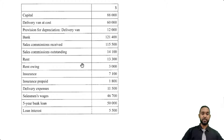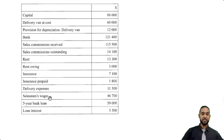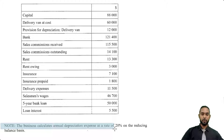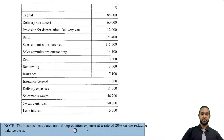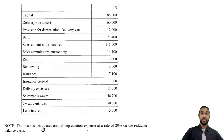Next, we have rent of 13,300 and rent owing of 3,000 — that's an accrued expense, which is going to be added together to get the income statement figure. Next, we have insurance of 7,100 and insurance prepaid of 1,800. If we add accruals, we do the opposite for prepayments, so we're going to subtract this 1,800 from the insurance figure that was actually paid. Then we have delivery expenses 11,500, salesman's wages 46,700, five-year bank loan 50,000, and loan interest 55. There's one more note which says the business calculates annual depreciation expense at a rate of 20% on the reducing balance basis.